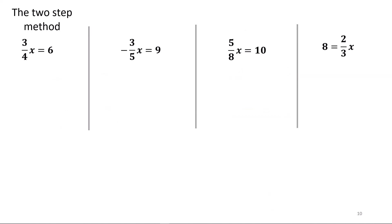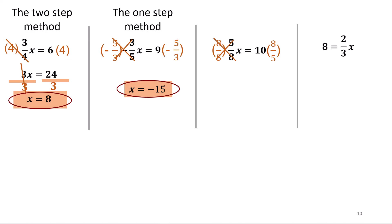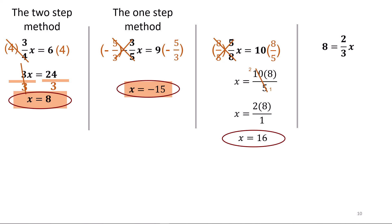Give these a try using the two-step method on the first one, then the one-step method on the other three. In the first one, we multiply both sides by 4, giving 3x equals 24, then divide both sides by 3, giving x equals 8. In the next equation, we multiply both sides by the reciprocal of negative 3 over 3; it cancels on the left and gives x equals negative 15. In the third equation, we multiply both sides by 8 over 5, the reciprocal of 5 over 8; on the right we have 10 times 8 over 5, and 10 over 5 reduces to 2 over 1, making it 2 times 8, which is 16.